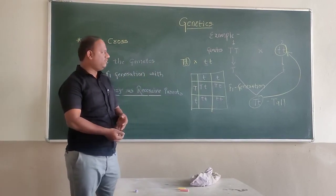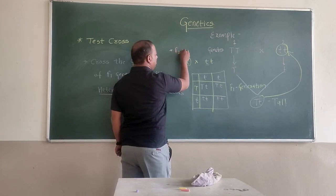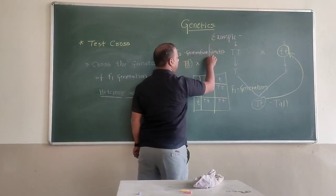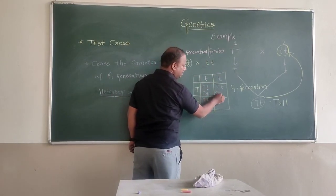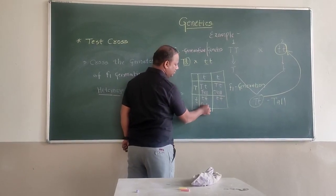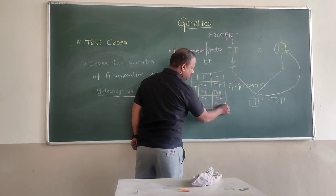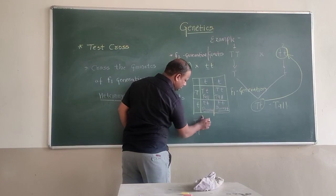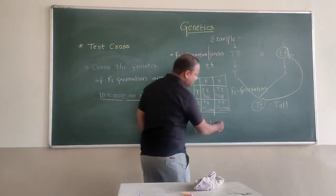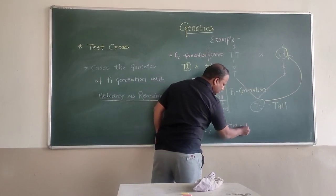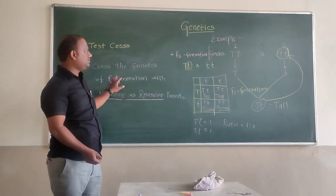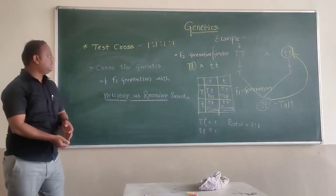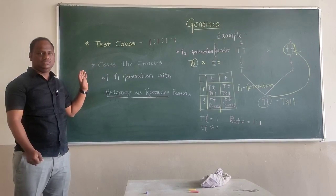What will be the phenotype of the F2 generation? The phenotypes will be tall and dwarf. 50% will be capital T (tall) and 50% small t (dwarf), so the ratio of test cross will be 1:1. In test cross, the ratio will always be 1:1:1:1.